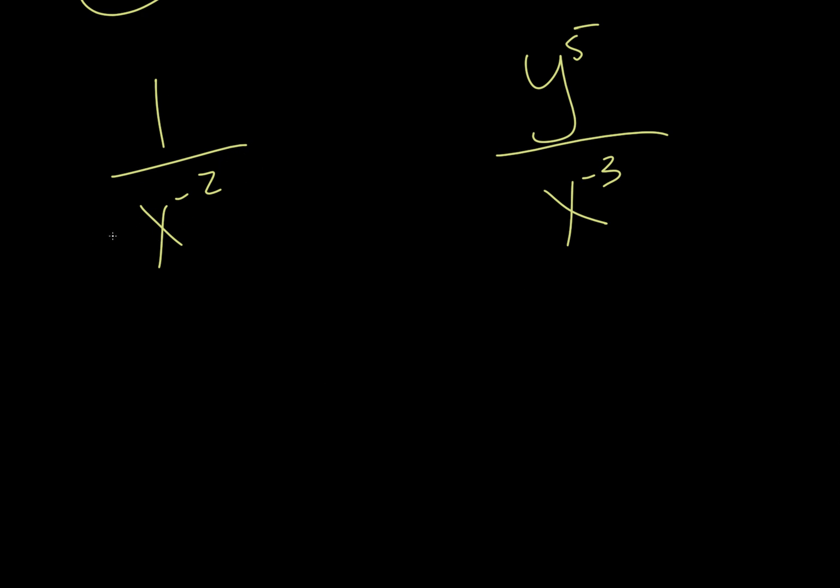So remember what we do? We have a ninja 1. We take all the pieces that are connected to the negative exponent, switch the side of the fraction. So this one's on the bottom. Bring it to the top. So we have 1x squared over 1. These two ones are redundant, and so we'll just write it as x squared.